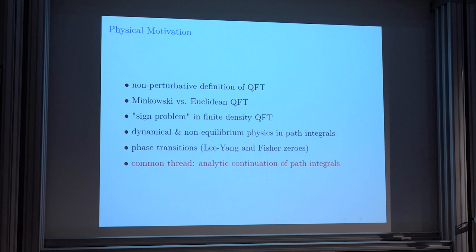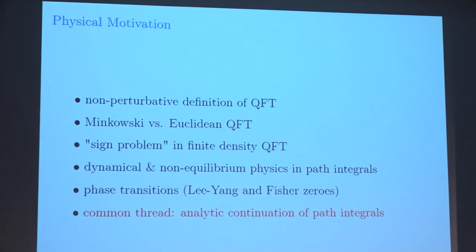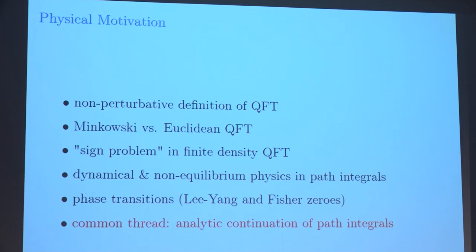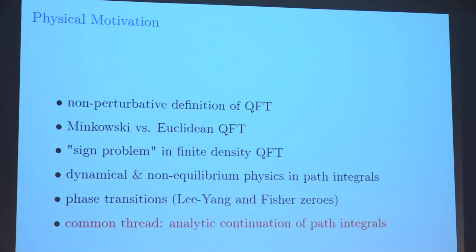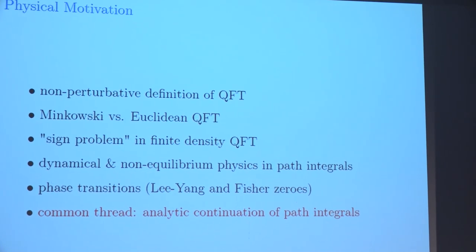There's a very famous problem in field theory called the sign problem, related to finite density quantum field theory. It's one of the top ten problems in theoretical physics, with impact in particle physics, nuclear physics, atomic physics, condensed matter physics, and chemistry. It's a complete roadblock with essentially no progress in 80 years. Another similar problem is non-equilibrium physics — real-time evolution in non-equilibrium systems without using just first-order perturbation theory, doing it using path integrals. Resurgence has new ideas about how to approach this.